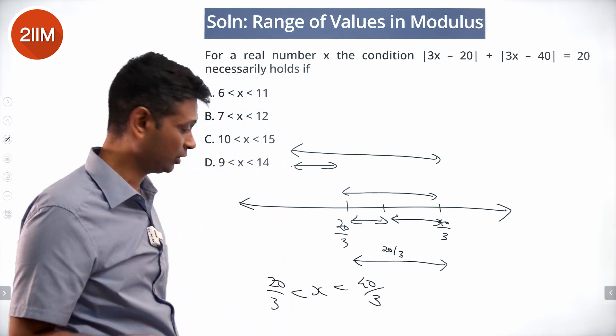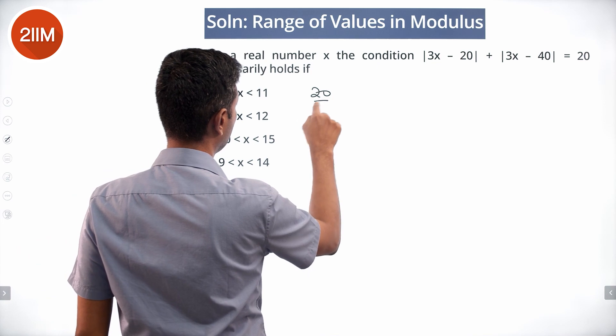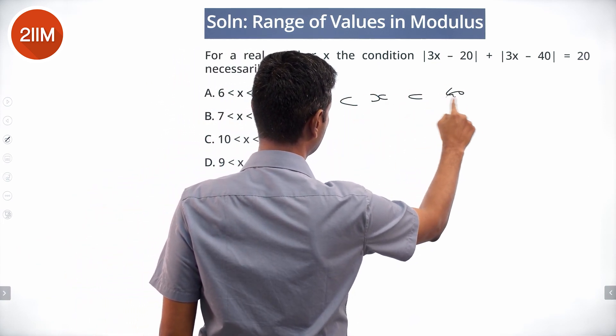Or our x is between 20 by 3 and 40 by 3. This is where x should lie. Now let us come to the question. So,